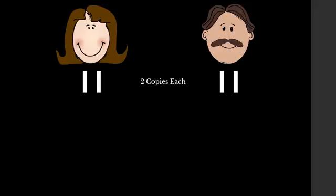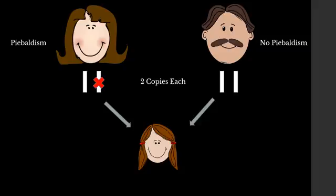Each parent has two copies of this gene but only passes one to their children. If the mom has one mutated copy and one normal copy, she will have piebaldism. If the dad has two normal copies, he does not have piebaldism. When they have a child, the child could get a mutated copy from mom and a normal copy from dad and the child would also have piebaldism.